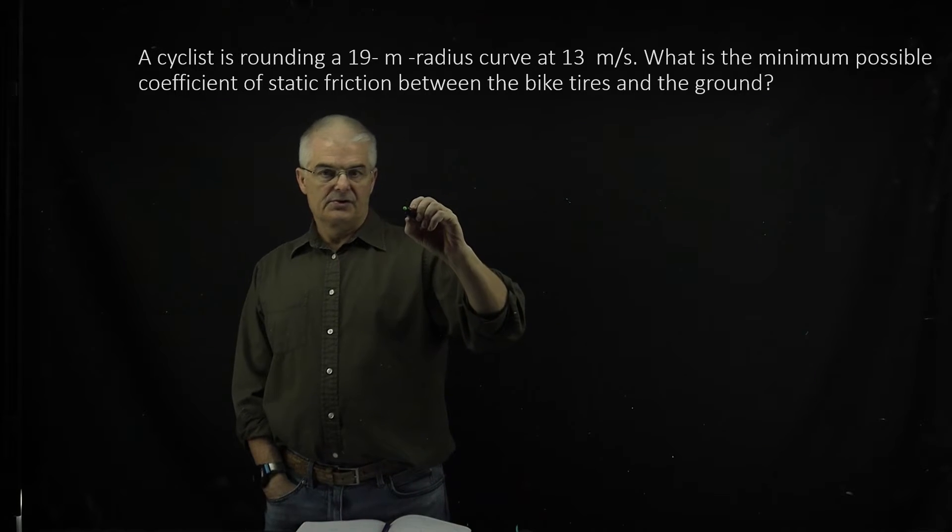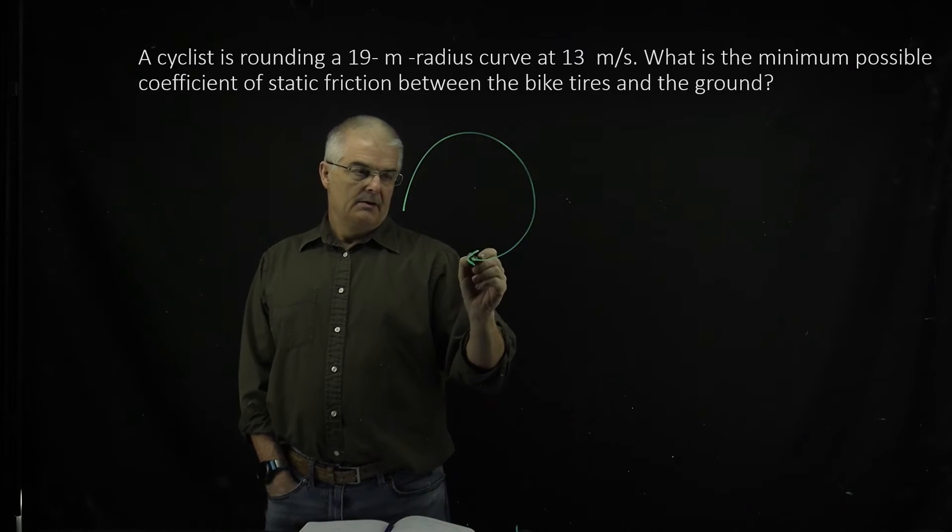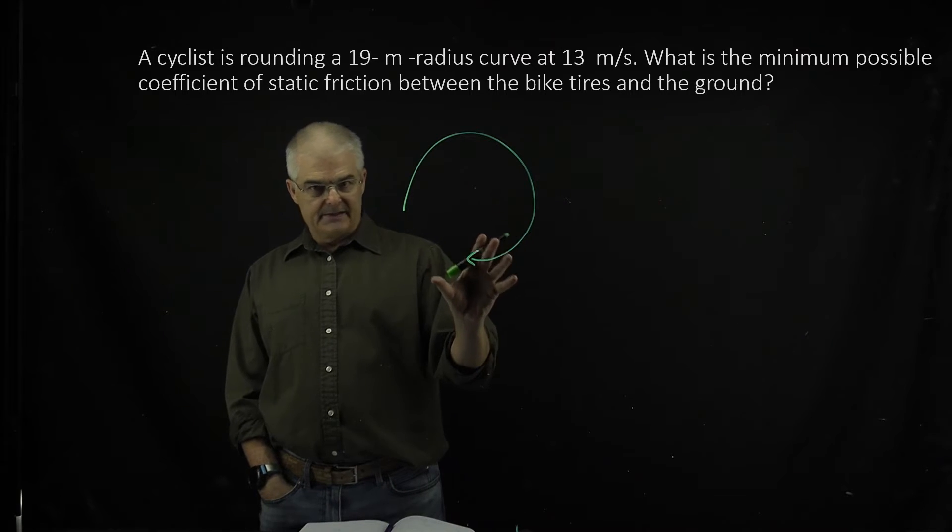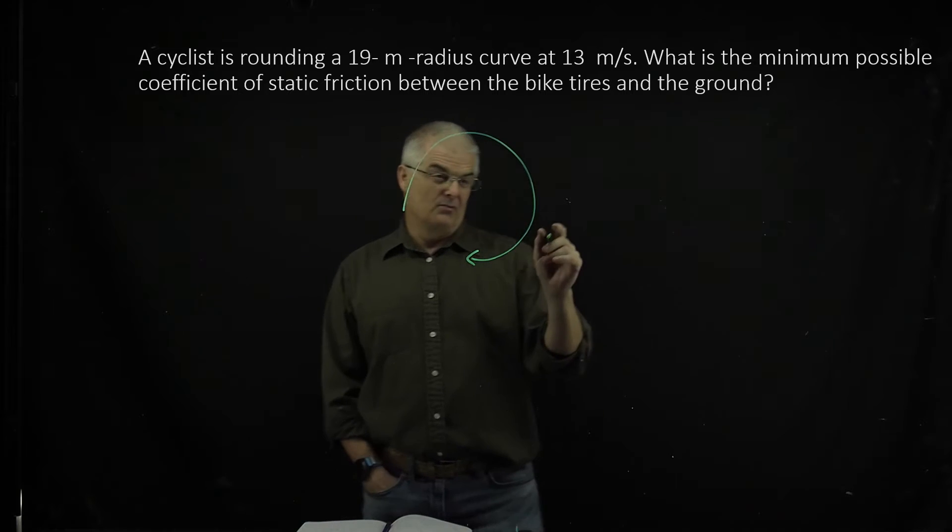So we've got a cyclist traveling in a circle, right? And it's asking for the coefficient that's going to hold your bike tires on the ground. So how's that going to work?